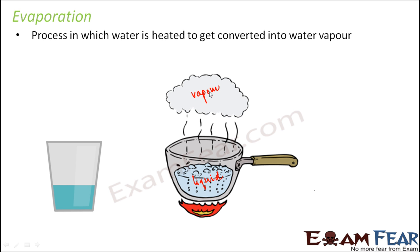You might ask how evaporation is a way to separate substances. Let us say this is not plain water but salt water — salt dissolved in water. If you take 3 teaspoons of salt and stir it well in a glass of water, it will completely dissolve. You will not be able to see the salt particles. Now if you want to separate the salt from water, that is very difficult because it has already dissolved. Filtration won't help, hand picking won't help, winnowing or threshing definitely won't help.